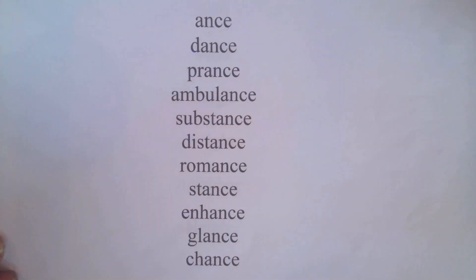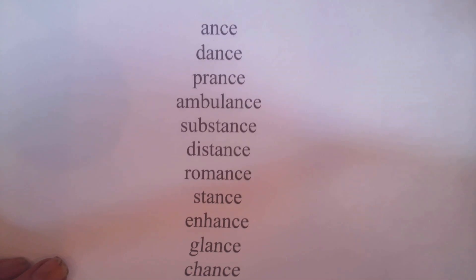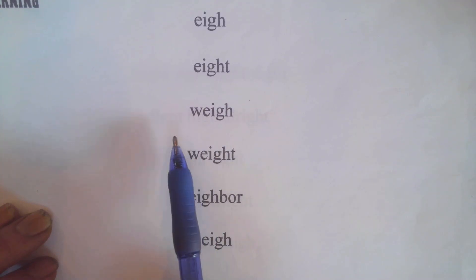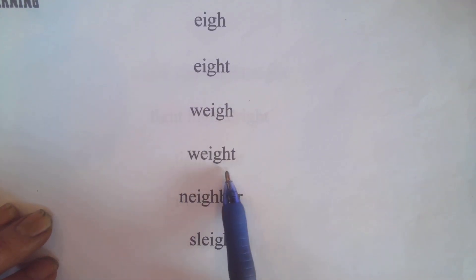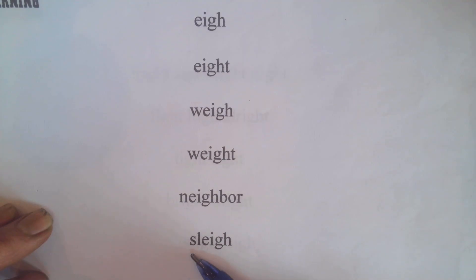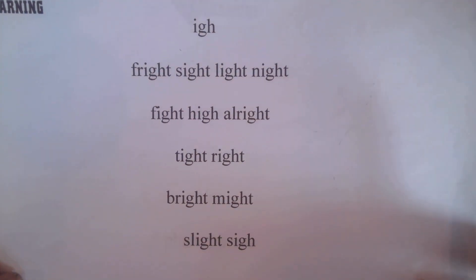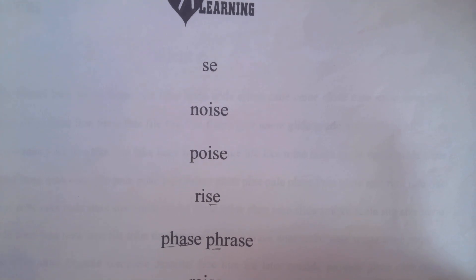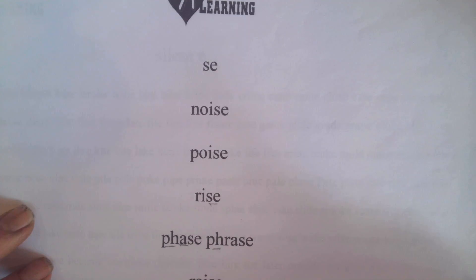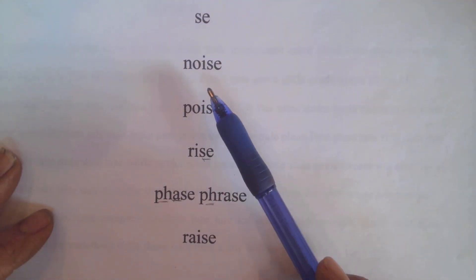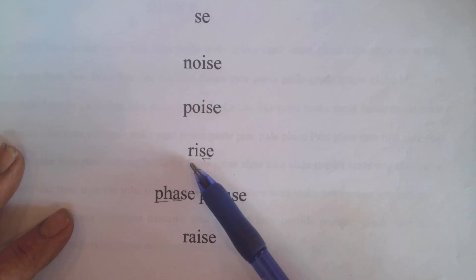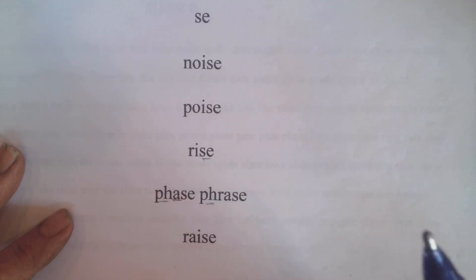They don't usually have a third blend in them. Let's go over EIGH — it makes A. Eight. What a way. Eight, wait. Neighbor. Sleigh. We're going to review I-G-H makes I. You can pause the video and read some of those. S-E makes S, but it makes more like a Z sound. O-I makes OI.